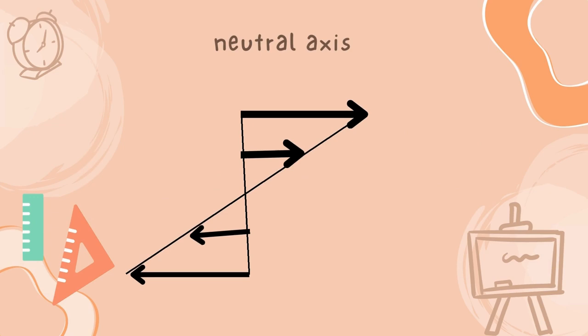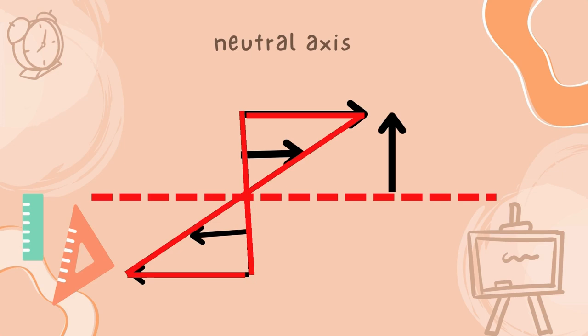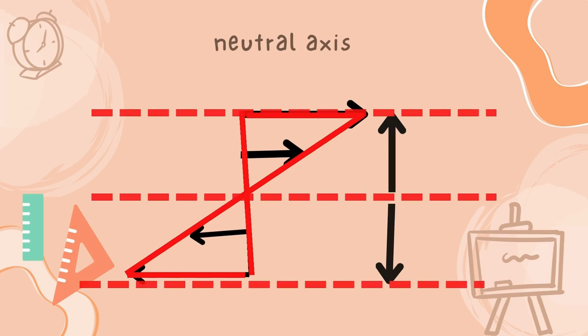If we see the distribution of the forces, it's like a linear shape with two triangles, one at the top and other at the bottom of neutral axis. The magnitude of compression or tension is directly related with the distance from the neutral axis.